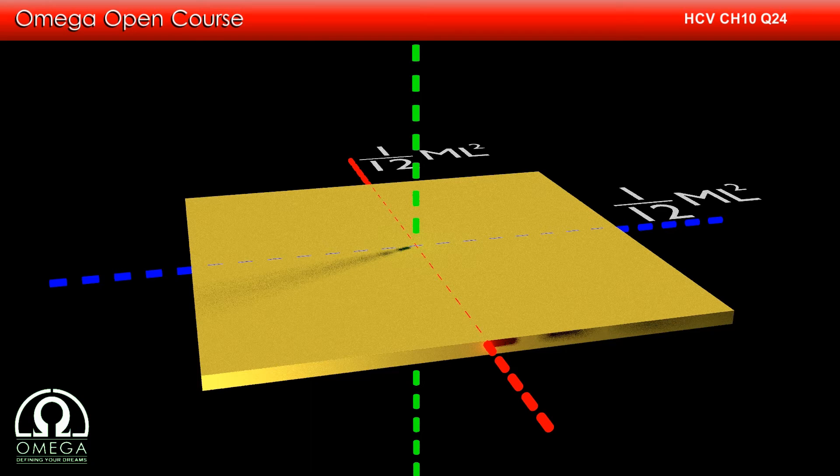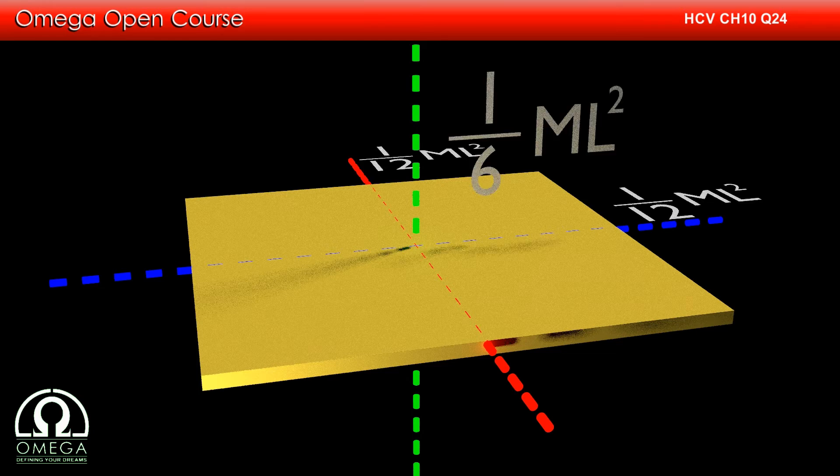Therefore, the moment of inertia about the axis perpendicular to the plane is 1 by 6 ml squared.